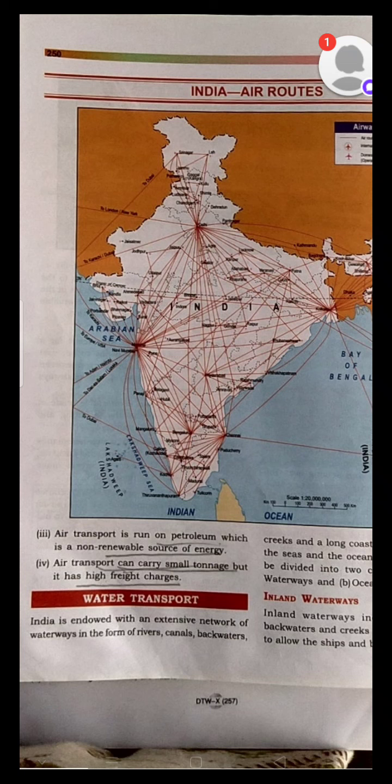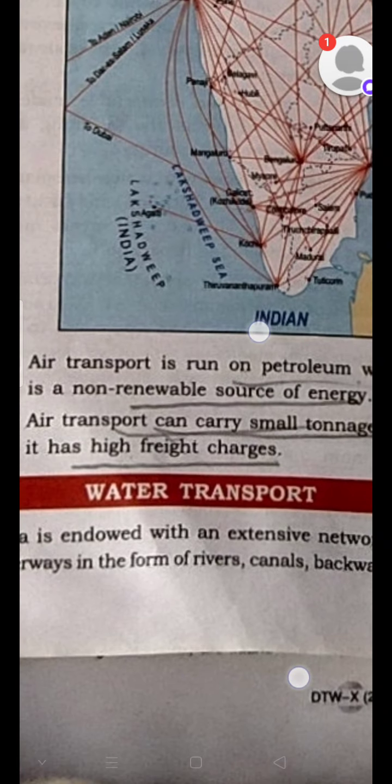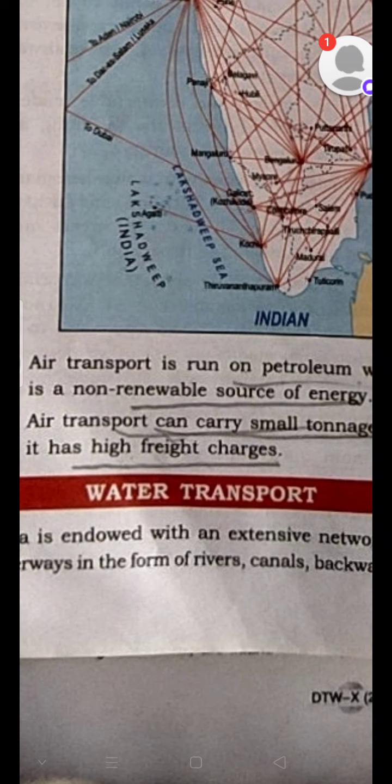Today we are going to study about water transport in India. India is endowed with an extensive network of waterways in the form of rivers, canals, backwaters, creeks, and a long coastline accessible through seas and oceans. Water transport can be divided into two categories: inland waterways and oceanic waterways.